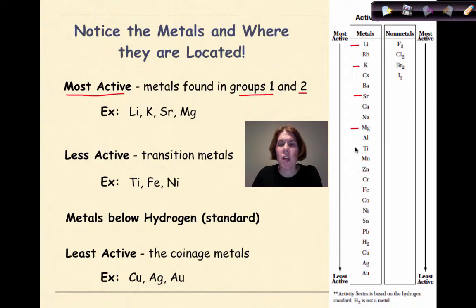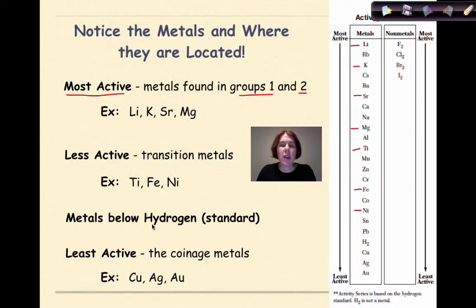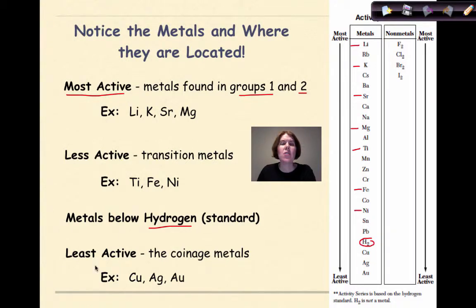We really need to look at this list and notice where the metals are located. Your most active metals are found at the very top, in groups one and two — elements like lithium, potassium, strontium, and magnesium. Your less active metals are going to be your transition metals found sort of in the middle: titanium, iron, nickel, zinc, chromium, manganese. Then we have the metals that are below hydrogen, which is the standard by which all activity of other metals is based. These will be our least active metals, otherwise known as the coinage metals: copper, silver, and gold.